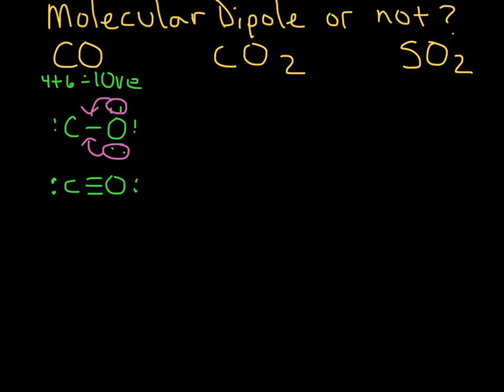Carbon monoxide is a molecule that has both a bond dipole. We know that because the electronegativity difference between carbon and oxygen is fairly significant, so electrons are drawn toward oxygen in this bond. Because this is all there is to the molecule — a diatomic — it also has a molecular dipole.